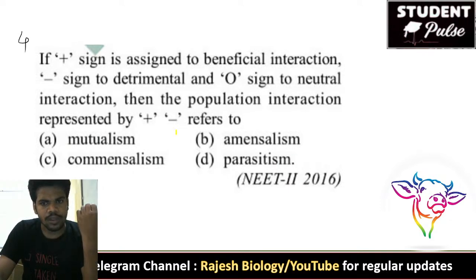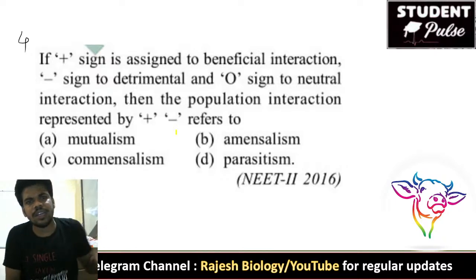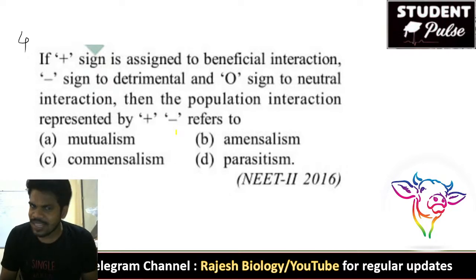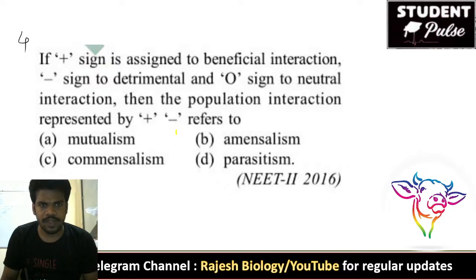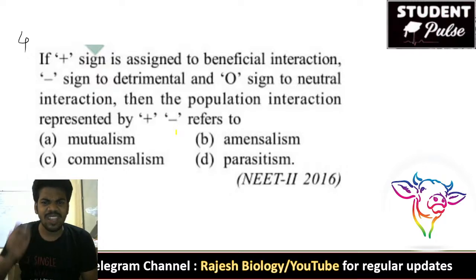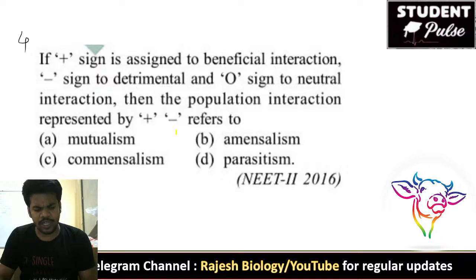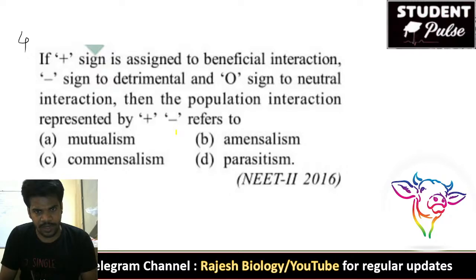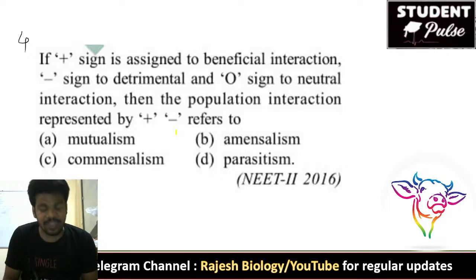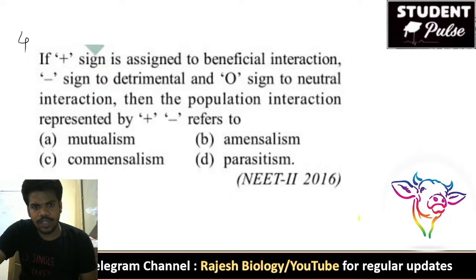Fourth question: if a plus sign is assigned to beneficial interaction, a minus sign is for negative or detrimental, and zero is neutral — in which type of interaction does one species get benefited and the other gets harmed? Mutualism is both get benefited; amensalism means one is not affected but one gets adversely affected; commensualism means one benefited and other is neutral. For this the right answer is parasitism — plus and minus.